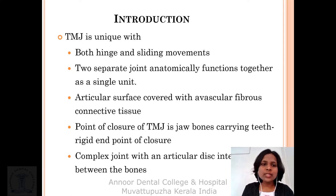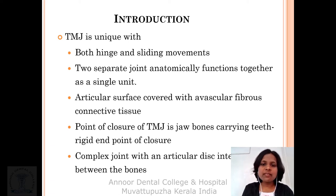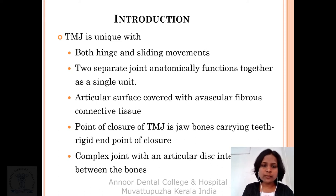Why is TMJ so unique? It's a joint with both hinge and sliding movements. These are two separate joints anatomically that function together as a single unit. Its articular surface is covered with avascular fibrous connective tissue. The point of closure of TMJ involves jaw bones carrying teeth, forming a rigid end point of closure. It's a complex joint with an articular disc situated between the bones.